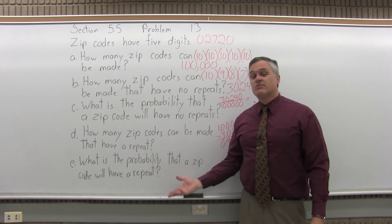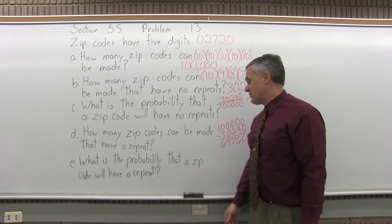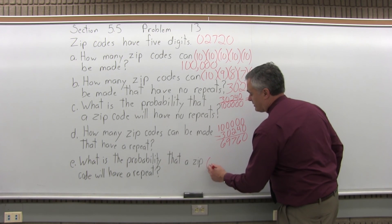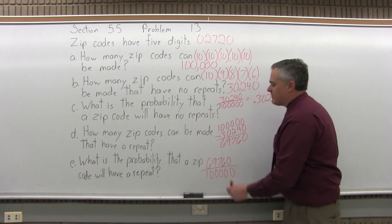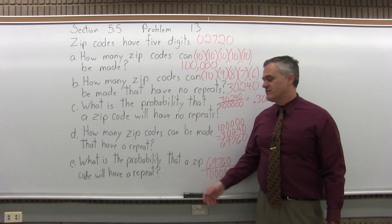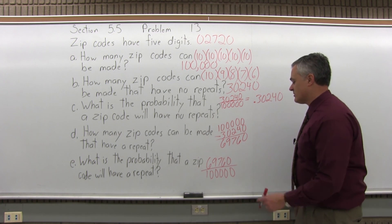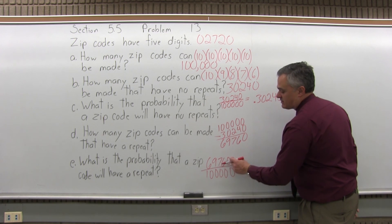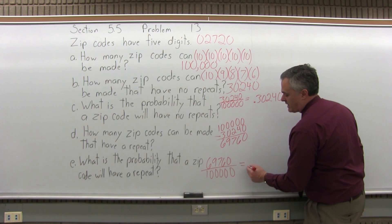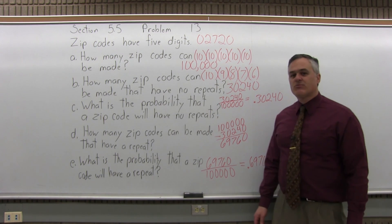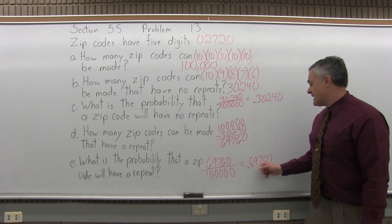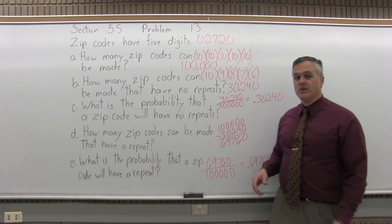And part E, what is the probability that your zip code would have a repeat? It would be the number of zip codes with some sort of repeated digit in it over the total number of zip codes that are possible that you can make. And again, because of all the zeros, you could easily do this division without a calculator. Of course, you could use one if you like, but the five zeros just pull your decimal back five spots, and it comes out to 0.6976. Almost a 70% probability, or about 69 and three-quarter percent if you want a little bit more accuracy.